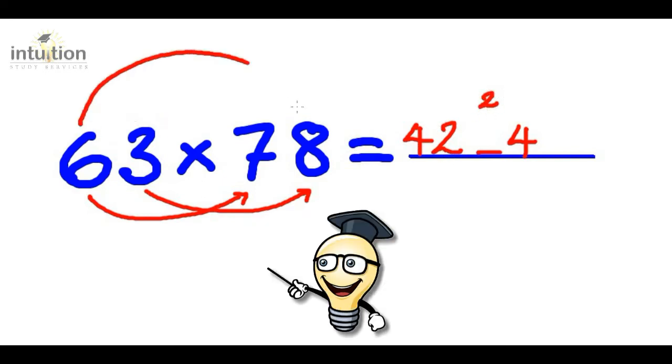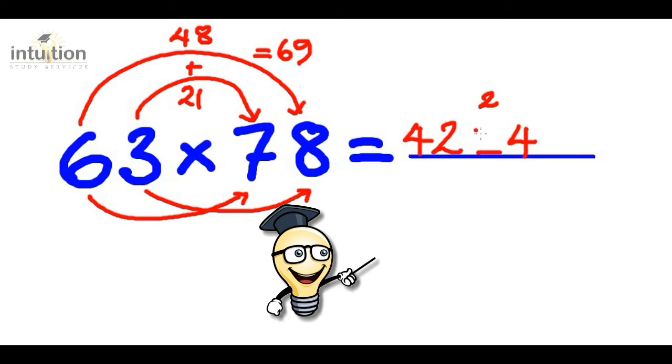Then we do the rainbow. So we do 6 times 8, which is 48, and we add that to 3 times 7, which is 21. That totals to 69. Now adding this 2 from before, that gives 71. So we put the 1 here and we carry the 7 over here. Now that 7 gets added to the 42. So in total, the final answer then becomes 4914.